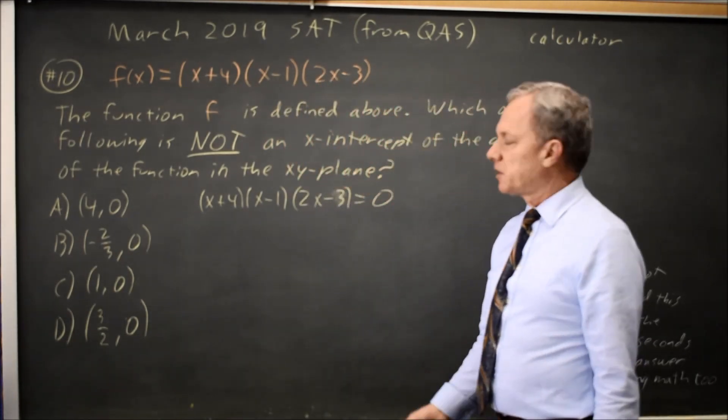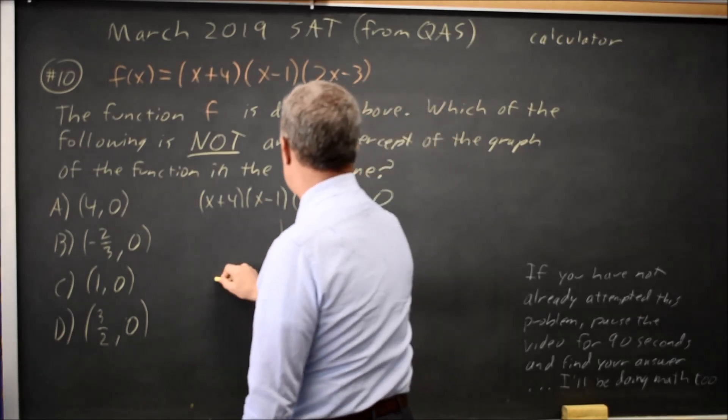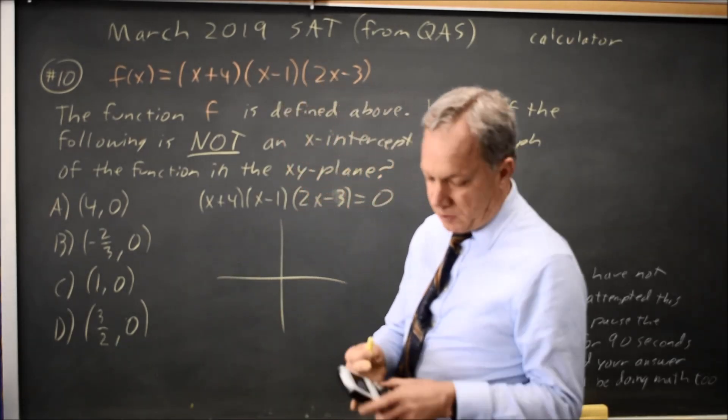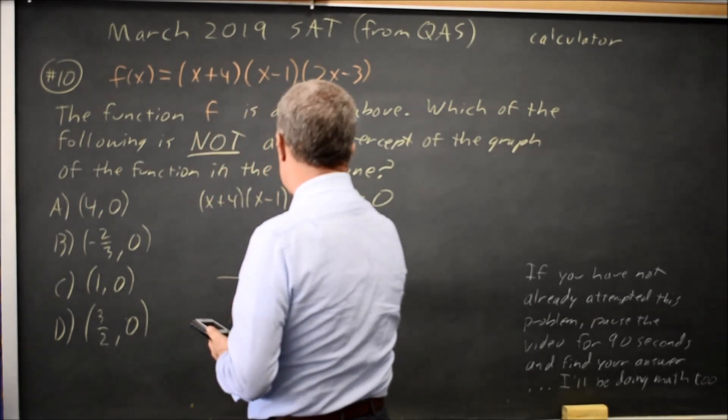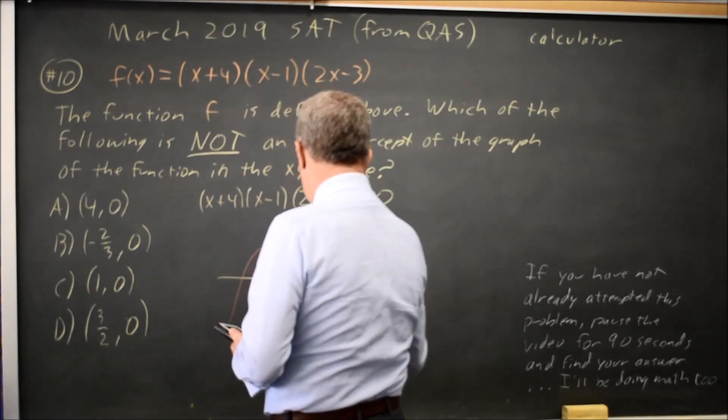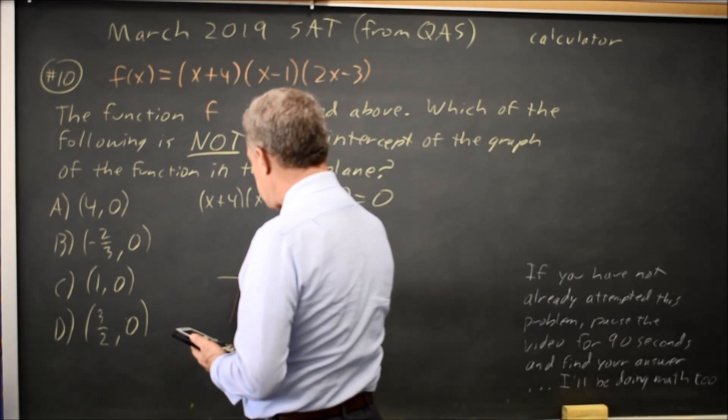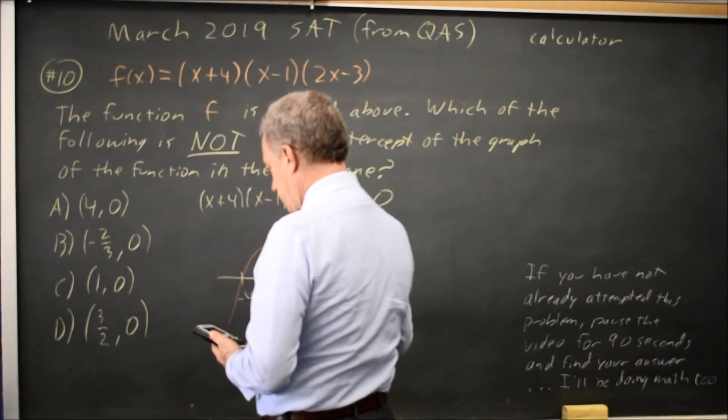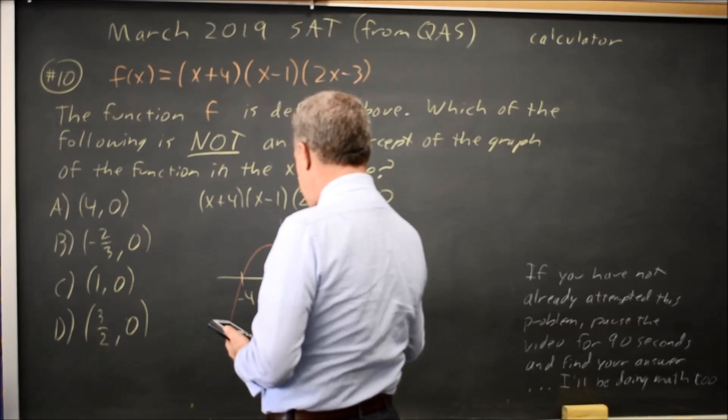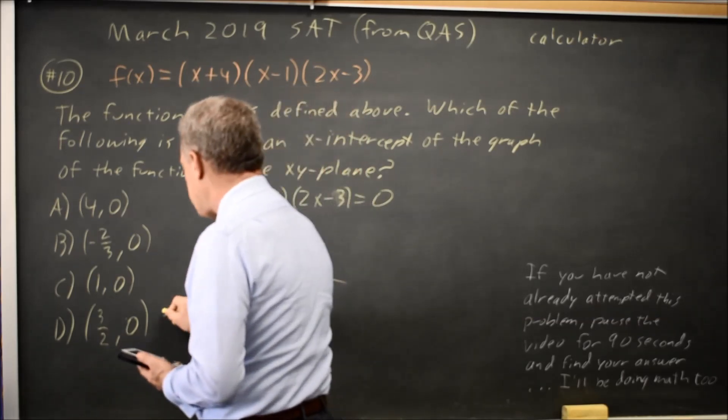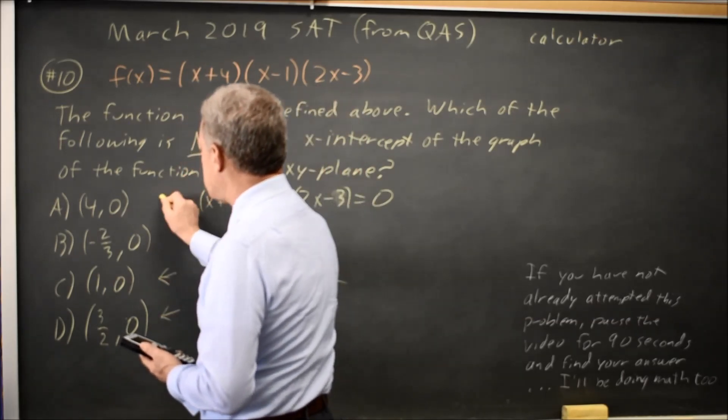I can graph that on my calculator and see the zeros. On my calculator, the graph looks something like this, with zeros at negative 4, positive 1, and positive 1.5, which is positive 3 halves.